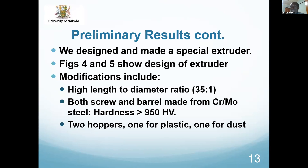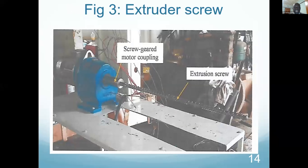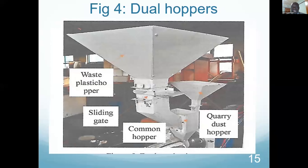To solve the problem of the extruder, we had to design a special extruder. The key modifications were: first, a high length-to-diameter ratio; second, both the screw and barrel had to be made from chromium-molybdenum steel with hardness in excess of 950 HV to handle hard particles; third, our extruder has two hoppers — one for the plastic and one for the dust, which mix before being fed into the extruder. The figure shows the screw attached to the motor and the hopper design.